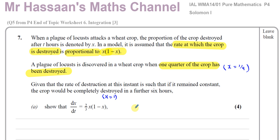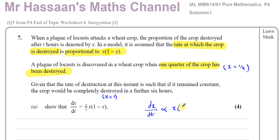We need to show that dx/dt equals (2/3)x(1 minus x). First of all, we know that the rate at which the crop is destroyed, dx/dt, is proportional to x(1 minus x) — they told us that. If something's proportional to something else, there's a constant of proportionality k, so it equals k times x times (1 minus x). We have to show that k equals 2/3.